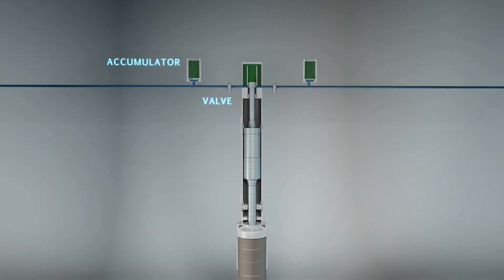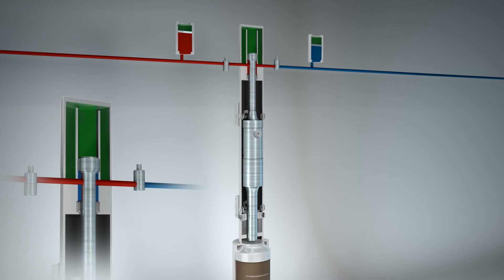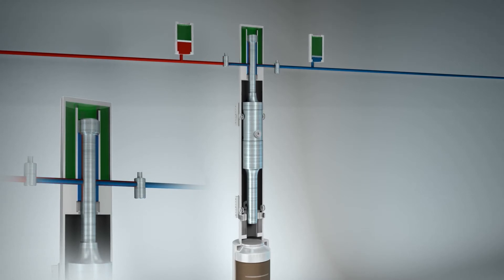The valves and accumulators are shown next to the hammer. In fact, they are in the hammer. The chamber above the piston is filled with a compressed gas.